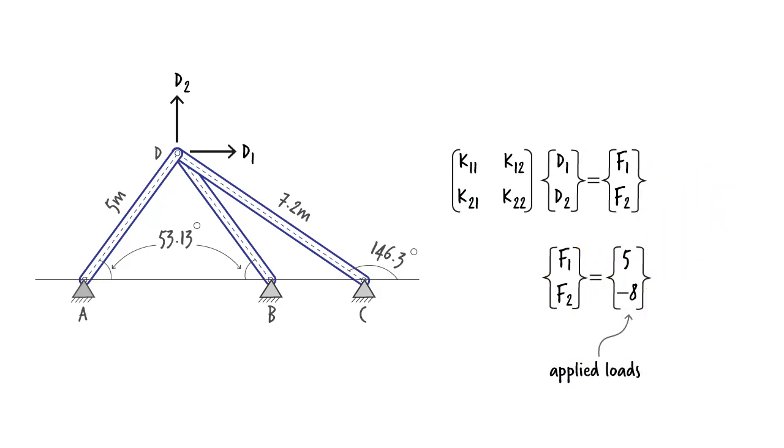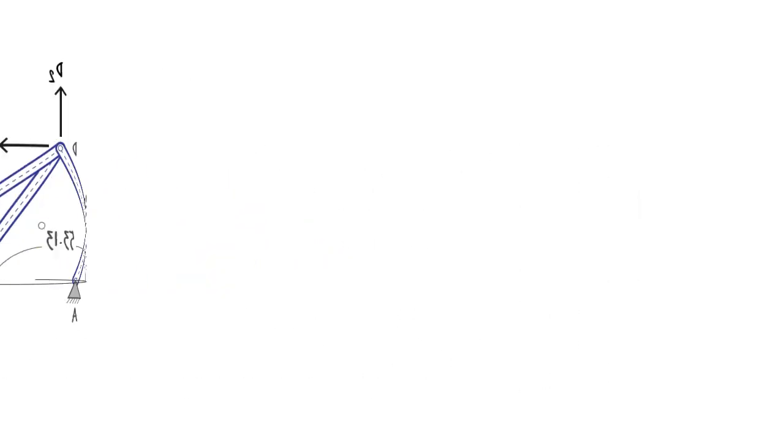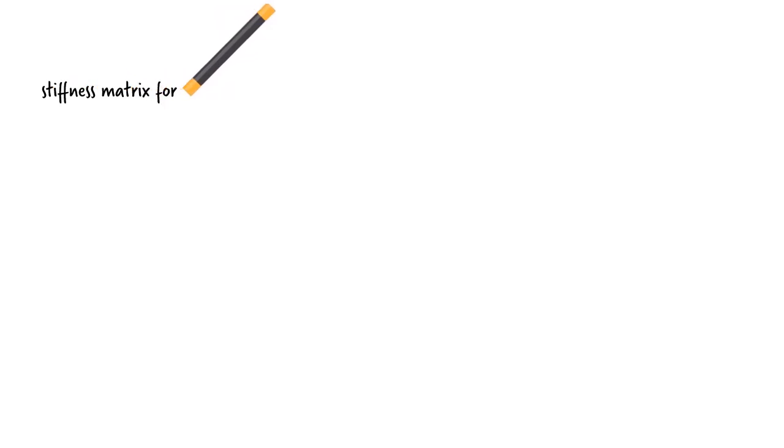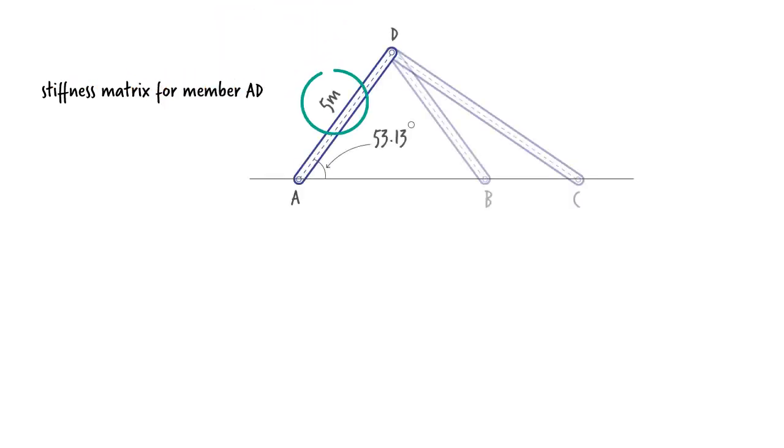We determine the stiffness matrix coefficients by using member stiffness matrices. First, we need to write the stiffness matrix for each member. As a reminder, here is the generic matrix. For member AD, the length is 5 meters and the inclination angle, theta, is 53.13 degrees.